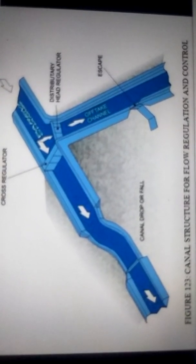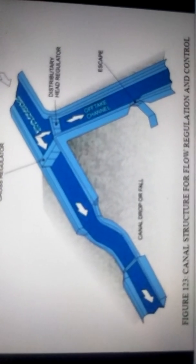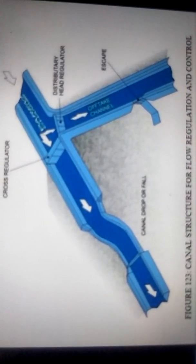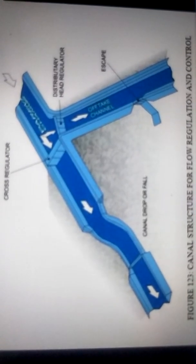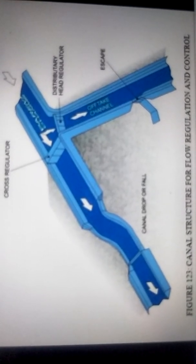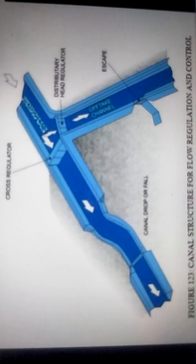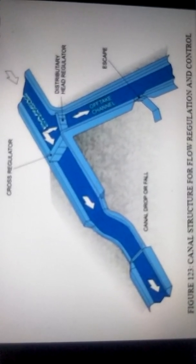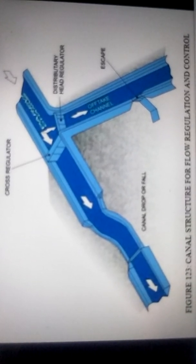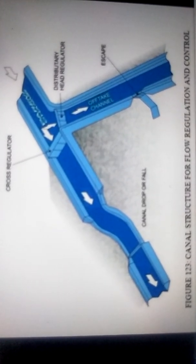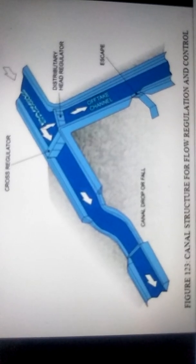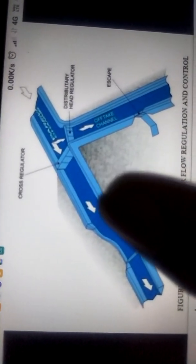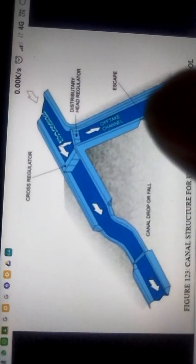This is another picture of canal structure for flow regulation and control. As you can see in this diagram, a cross regulator is made, and a distributive head regulator is also constructed against the flow of water. Arrows show the direction of flow of water. From the cross regulator, water offtakes in another direction, and from the distributive head regulator, water offtakes into the offtake channels. A fall is also provided for a particular purpose, also known as a canal drop, and in the offtake channel, an escape is provided.